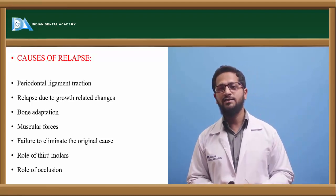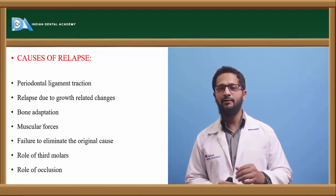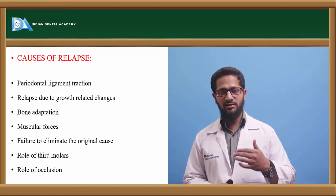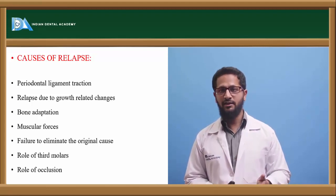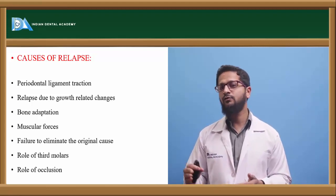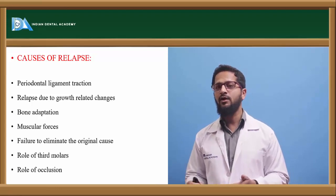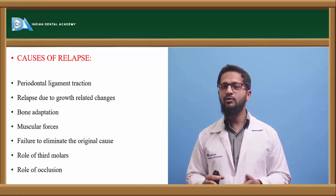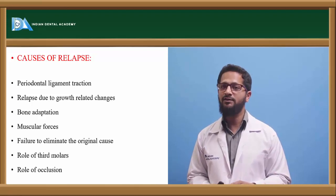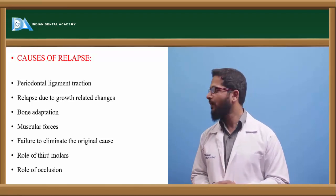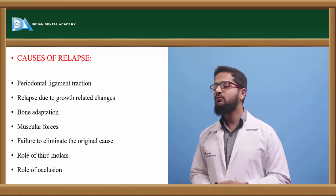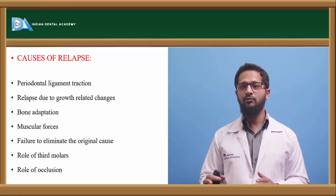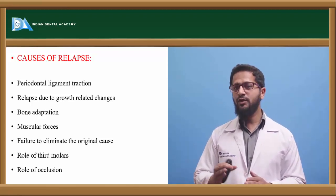The second cause is relapse due to growth-related changes, which is particularly important in Class 2, Class 3, open bite, and deep bite cases. If the malocclusion correction is done at an early age and abnormal growth is expected to continue, retainers must be maintained. Otherwise, abnormal growth will result in relapse.